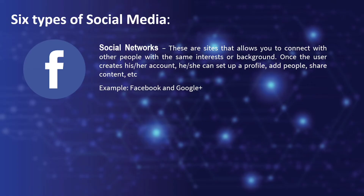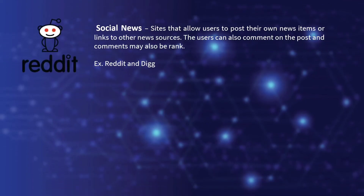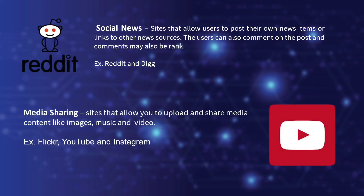Next are bookmarking sites — sites that allow you to store and manage links to various websites and resources. Most allow you to create tags. Examples include Tumblr, Yupon, and Pinterest. Social news sites allow users to post their own news items or links to other news sources; users can also comment on posts and comments may be ranked. Examples include Reddit and Digg. Media sharing sites allow you to upload and share media content like images, music, and video — examples include Flickr, YouTube, and Instagram.